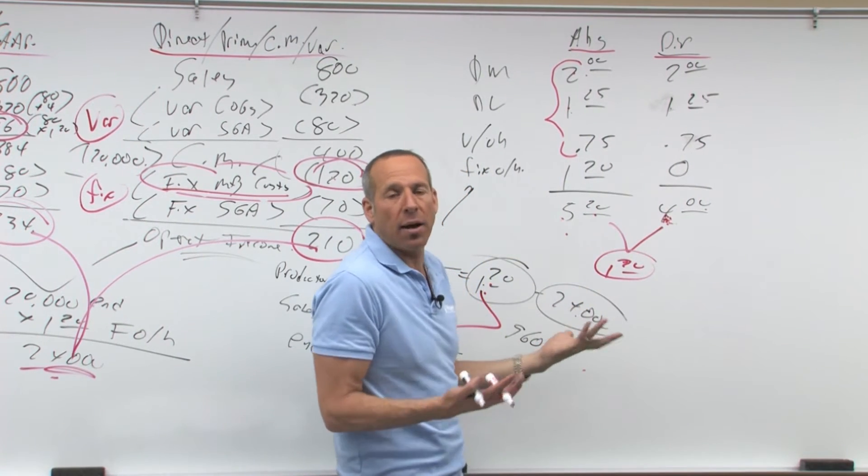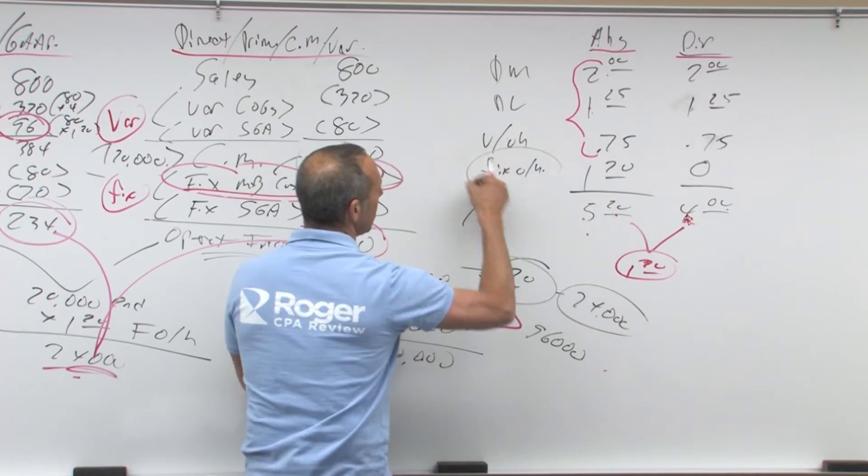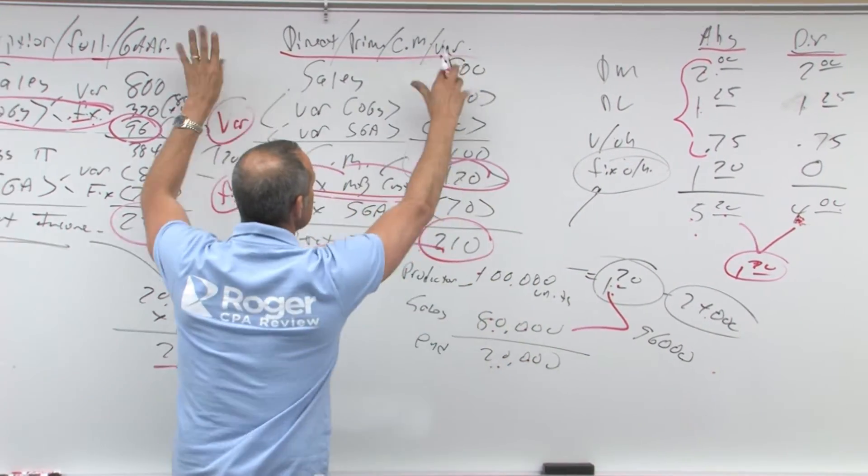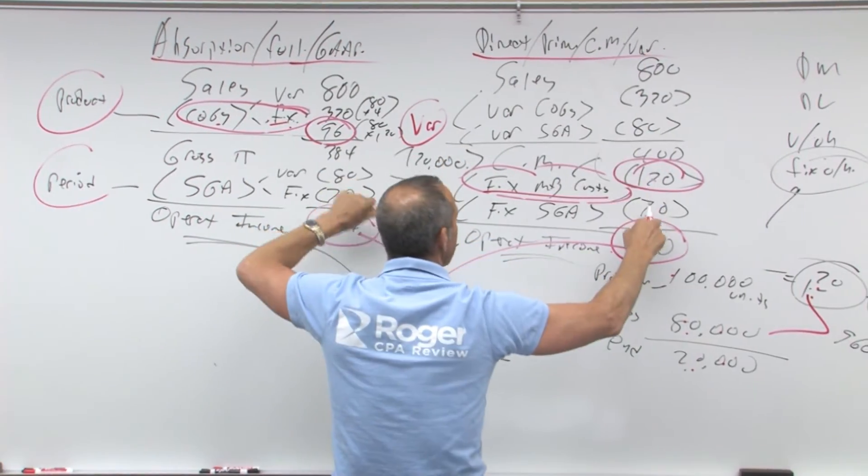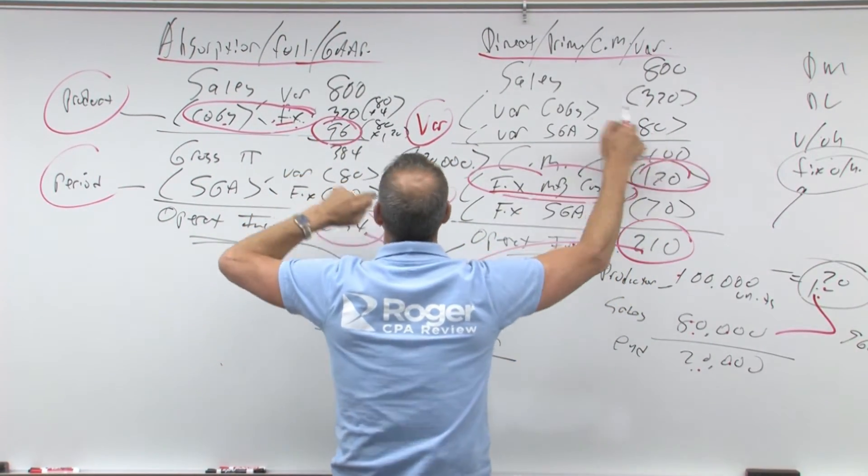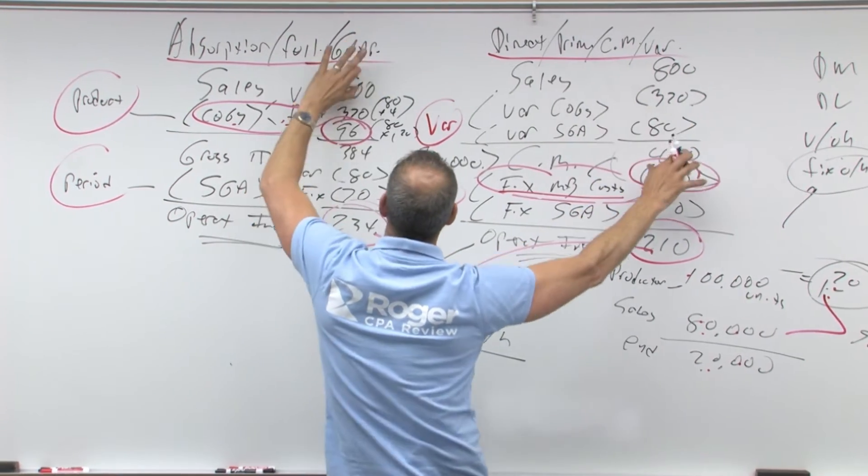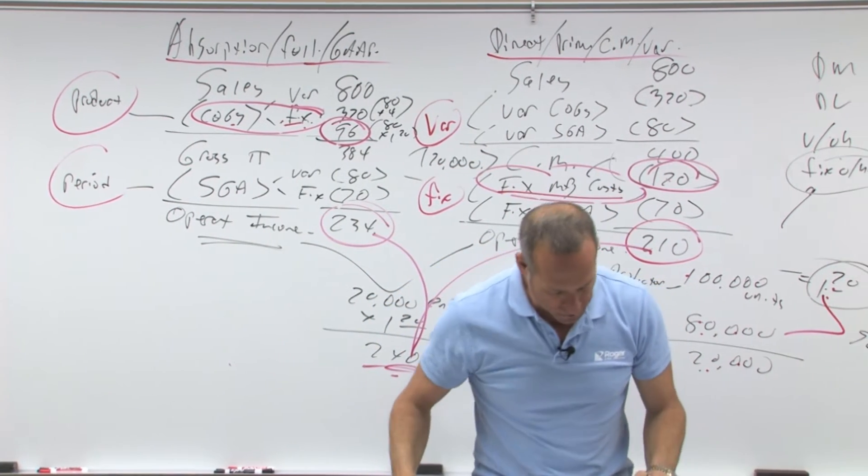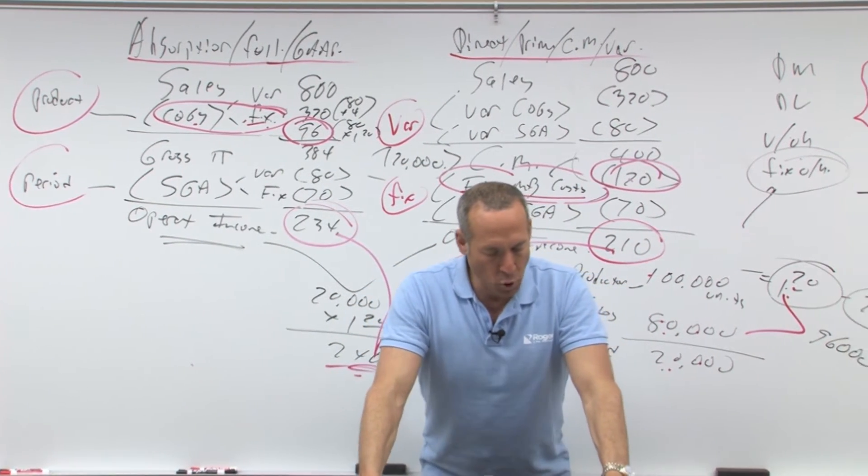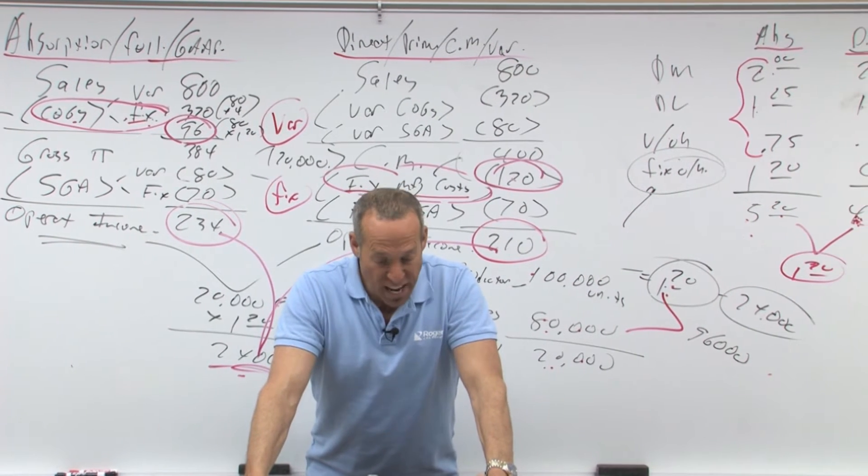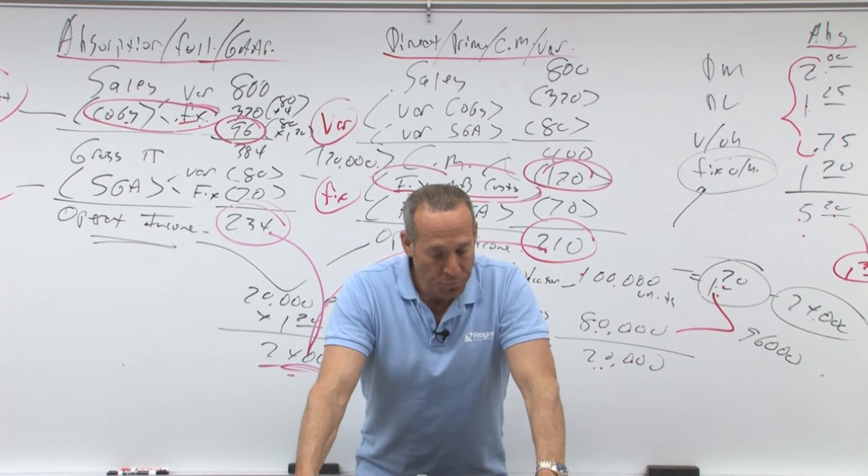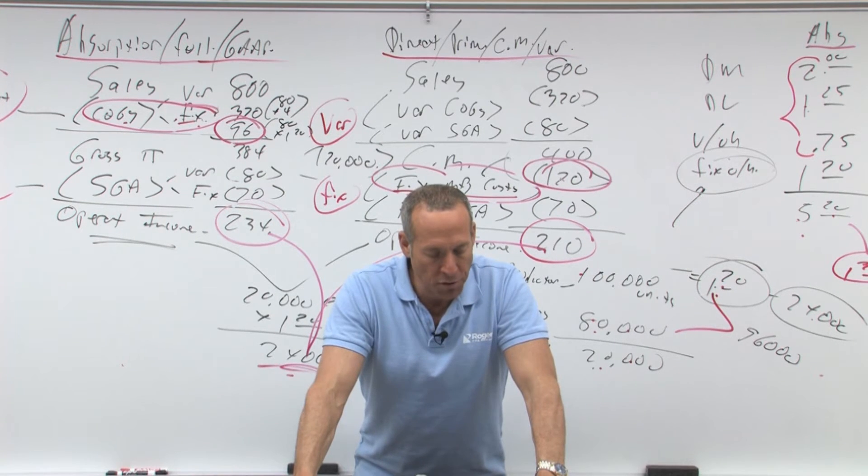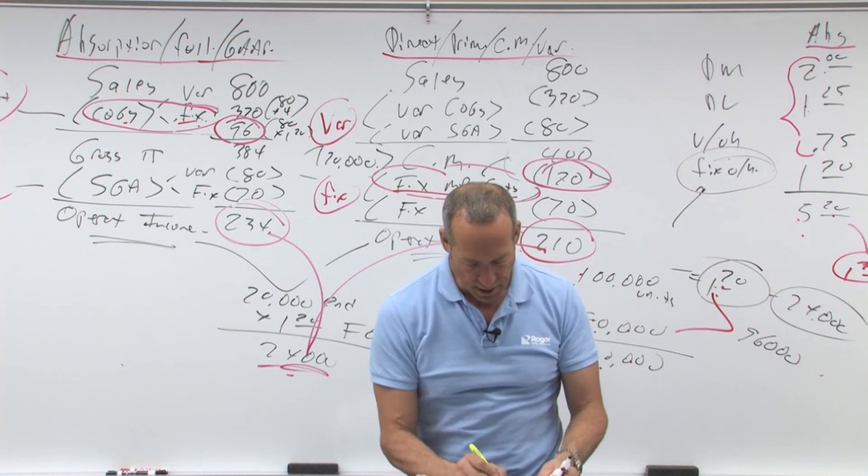They'll also ask you questions about how does it affect the difference. The difference would be the treatment of just your fixed overhead times the units. Notice SG&A is expensed as incurred in any case, 70, 70, 80, 80, okay, those are the same. Every number's the same with the exception of how you treat fixed overhead. All right, let's read in the notes. It says, variable and absorption costing methods of accounting for fixed manufacturing overhead differ. Under absorption, fixed manufacturing overhead is expensed,